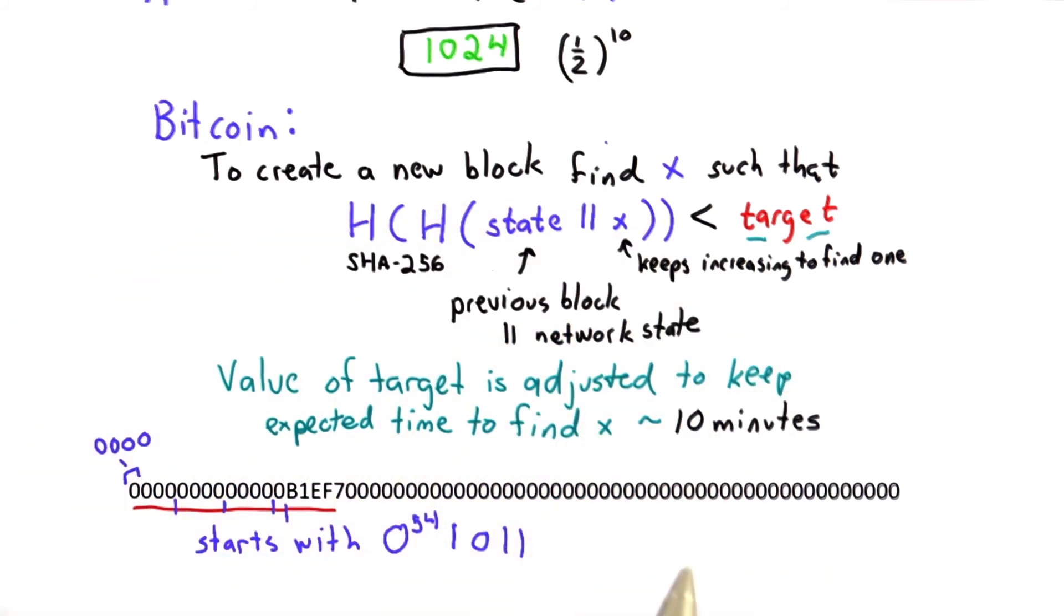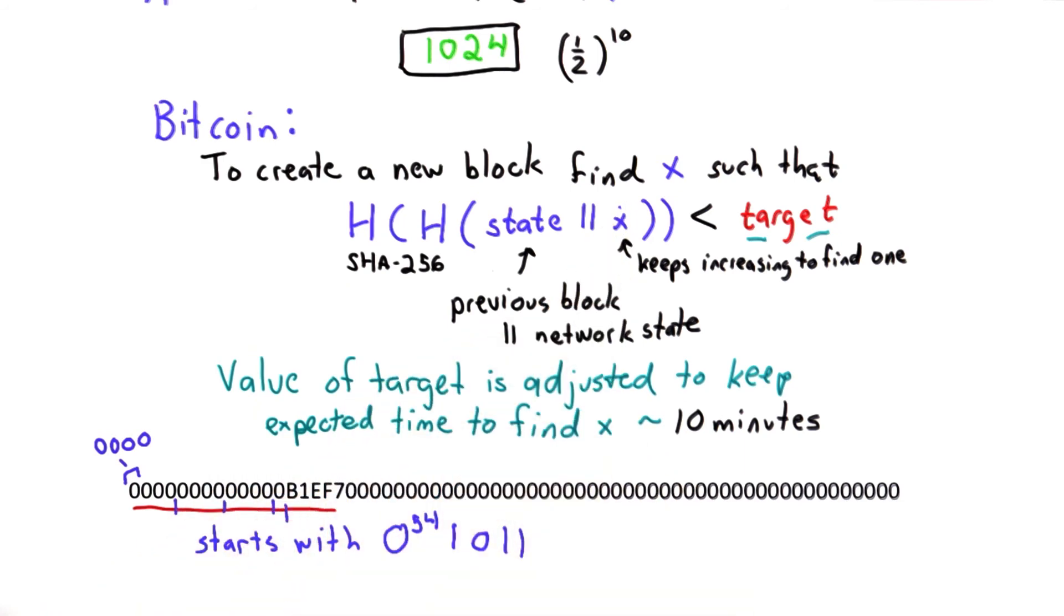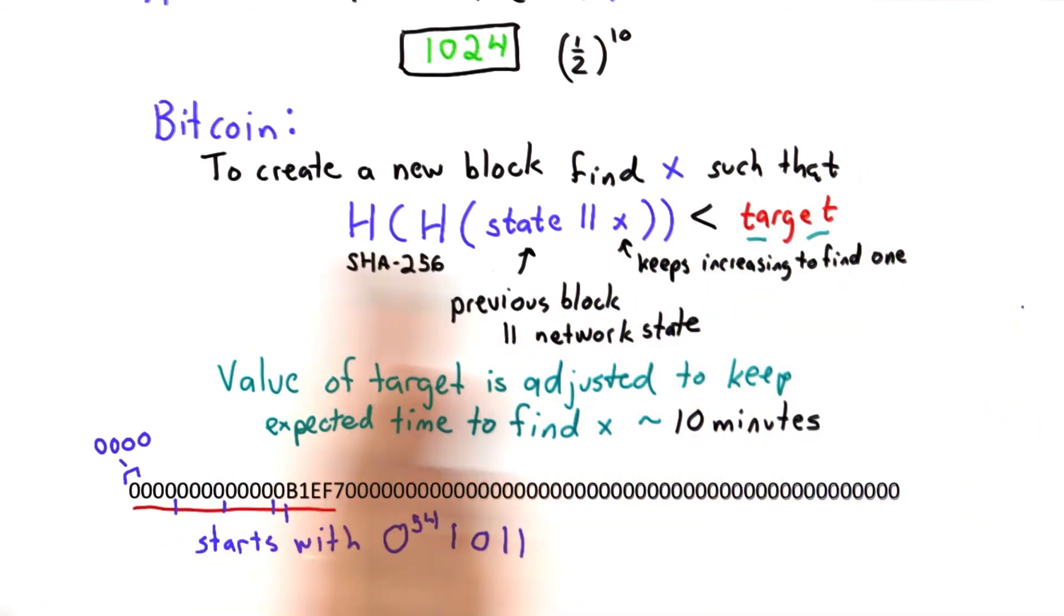And the rest of the network can verify that. It can compute the same hash function, verify that for the x value that you found, the value is less than the target. And that will add that block to the Bitcoin network.